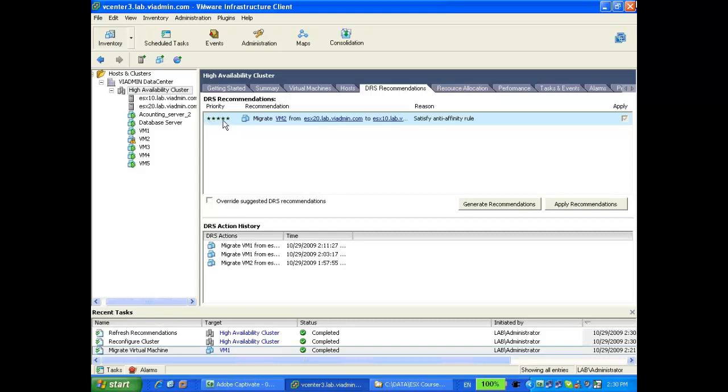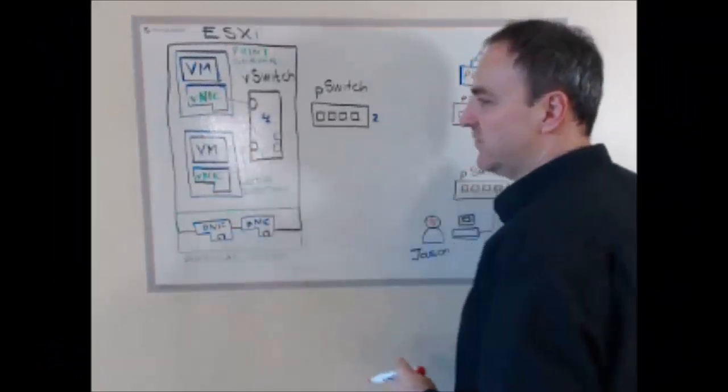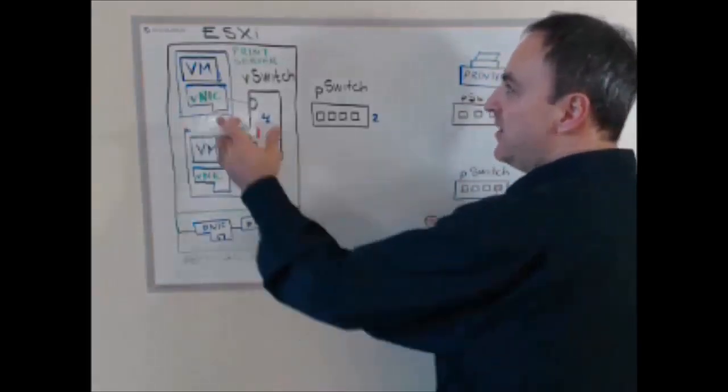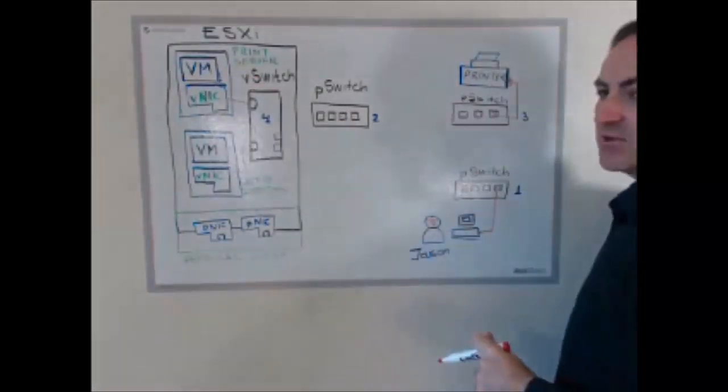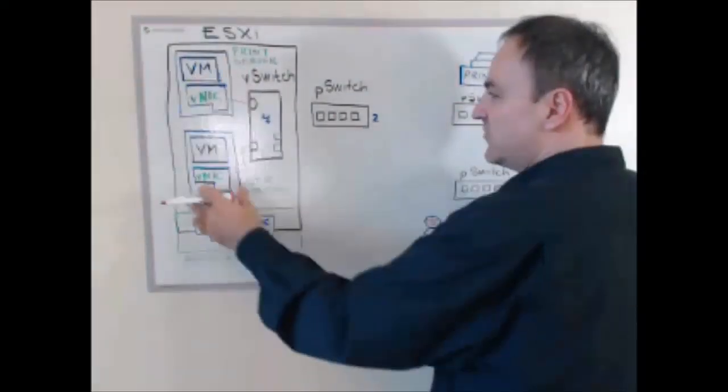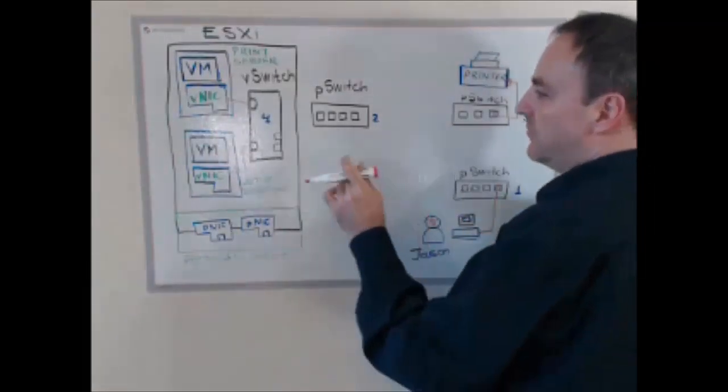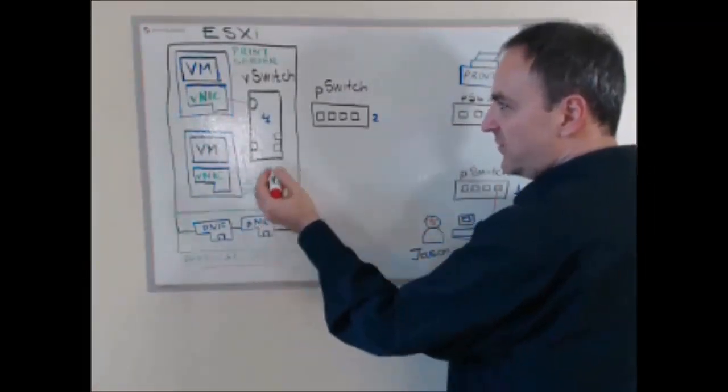OK, it took a couple of minutes, but a recommendation did pop up, and you can see it's a five-star recommendation, which means this really needs to happen. And the reason? It's to satisfy an anti-affinity rule, which you can remember we set up a rule a while back. And I'm going to connect the virtual network to the virtual switch. Now, the two virtual machines can talk to each other, but they're still not connected to the external physical world. In order to connect these two virtual machines to the physical world, what we need to do is we need to connect one of these physical network cards to the virtual switch.